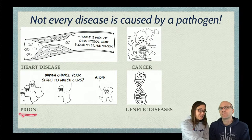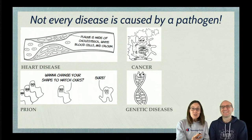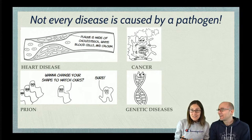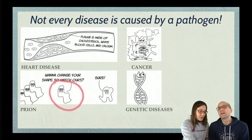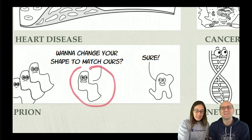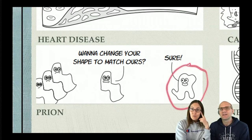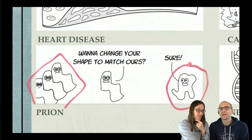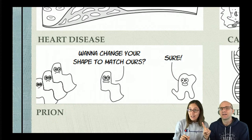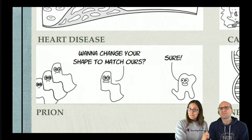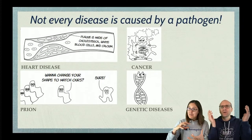Here's a really cool one — prions, sometimes pronounced prion. These are proteins that can cause a disease because the protein is not folded correctly. The misfolded zombie protein comes over to a normal protein found in your brain and nervous tissue, and causes it to change shape and clump together, destroying nervous tissue. It causes mad cow disease in cattle or Creutzfeldt-Jakob disease in humans. It's just a protein folded incorrectly — really bizarre and a more recently discovered disease.